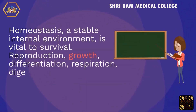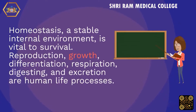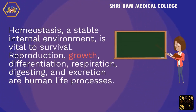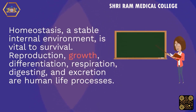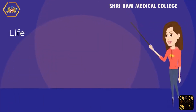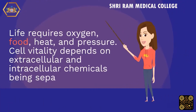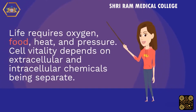Homeostasis, a stable internal environment, is vital to survival. Reproduction, growth, differentiation, respiration, digestion, and excretion are human life processes. Life requires oxygen, food, heat, and pressure. Cell vitality depends on extracellular and intracellular chemicals being kept separate.